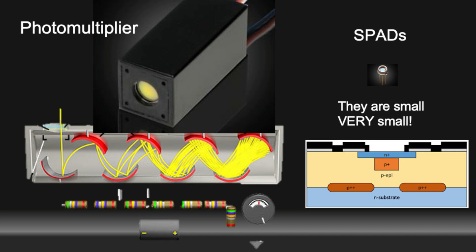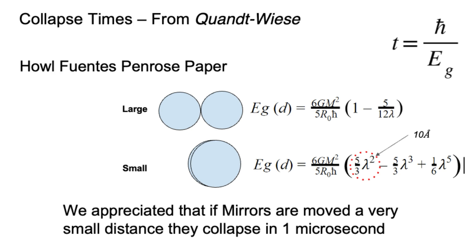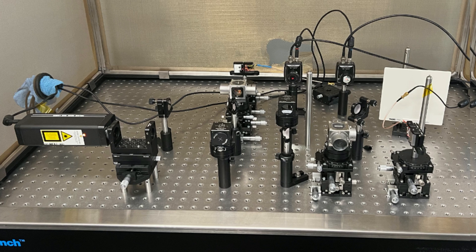We replace the amplifiers with SPADs — they're not going to collapse. Now obviously the motor and shutters are. There's a Powell-Fuentes-Penrose paper which says if you move by just one Ångström unit, you get a lambda-squared term — so you get 10 Ångström squared, which is an incredibly tiny number. That goes on the bottom of the equation, which means the time is very large. So you actually get a one-microsecond collapse time. So we built this, and I can show you what the trick is.